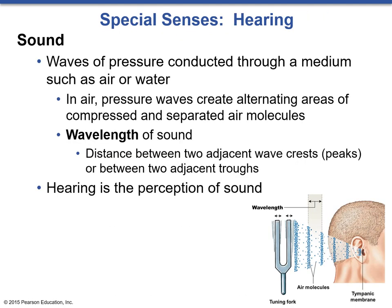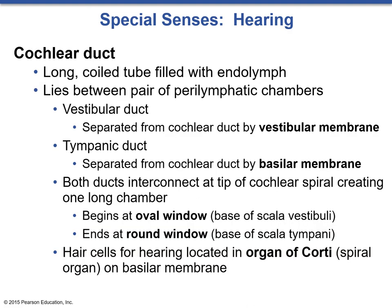Hearing is the interpretation of sound. Sound is really just pressure waves that result in the vibration and displacement of air or water. In air, pressure waves create alternating areas of compressed and separated molecules, creating wavelengths — the distance between two adjacent wave crests or between two adjacent troughs. Hearing is simply the perception of these displacements and vibrations. Interpreting sound is the job of the cochlear duct, a long coiled tube filled with endolymph, lying between two perilymphatic chambers: the vestibular duct and the tympanic duct.